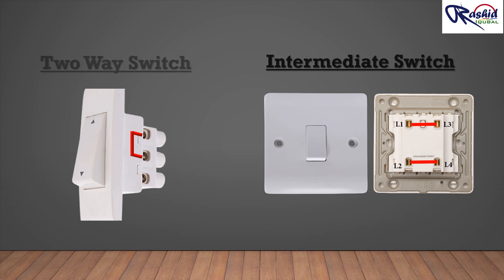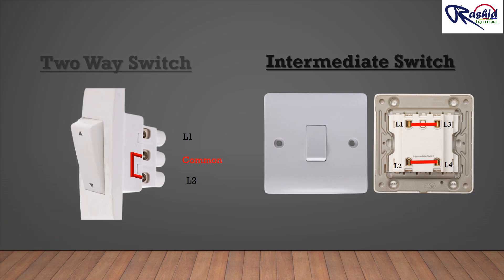The two-way switch has three terminals on the back. One terminal is called the common, and two terminals are called line 1 and line 2. If we flip up, the common terminal internally connects with line 1, and if flipped down, the common terminal connects with line 2.